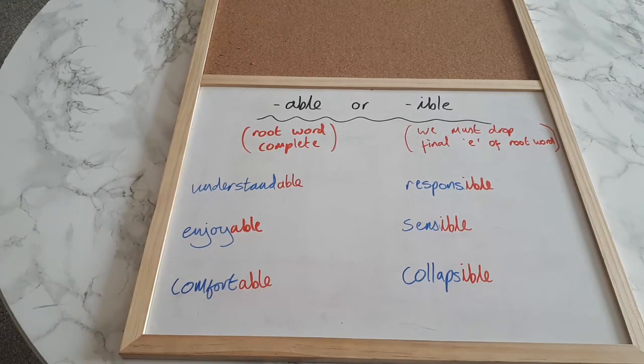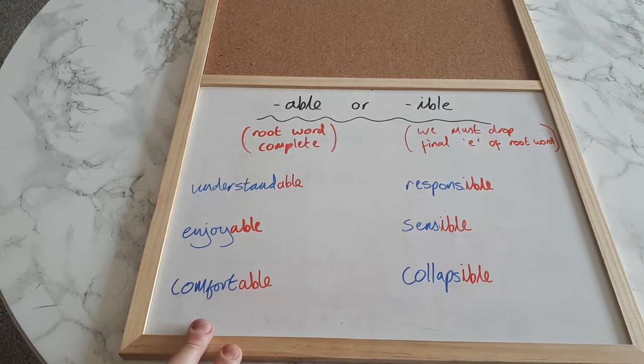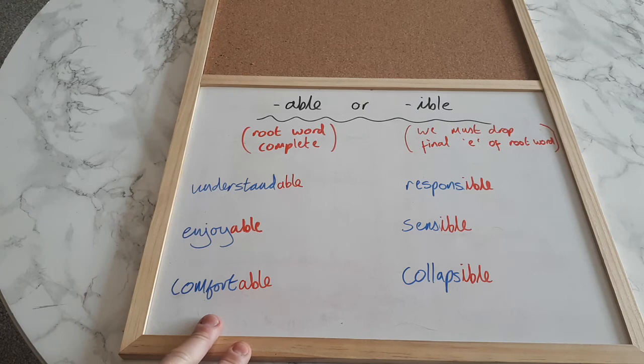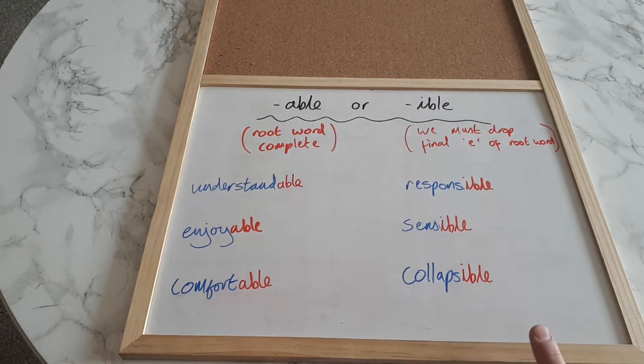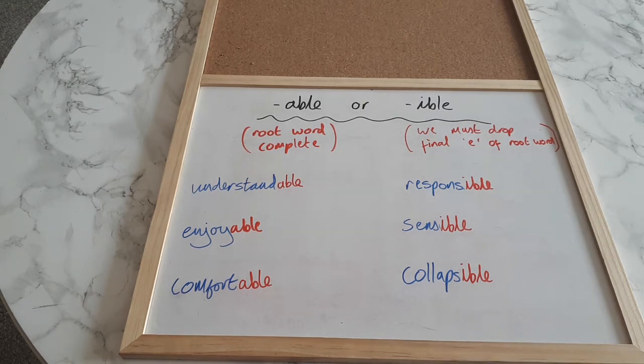So just a little thinking activity to go away. Go away and think about. See if you can come up with two more words for -able. So what words could have the -able suffix at the end there to create our adjective. And see if you can come up with one more -ible word. So there's a little thinking task to go away and I'll be back again soon with some more videos for us to have a go at. Okay take care and I'll see you soon. Bye.